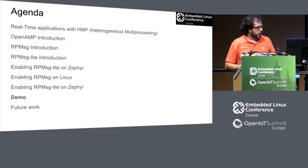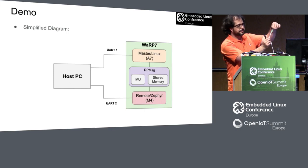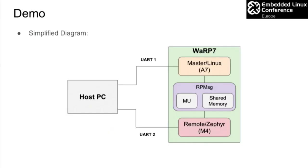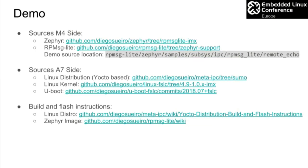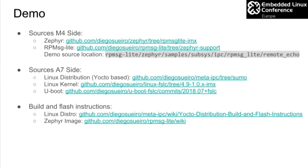For the demo, I have the Warp7 board — a very small board. The master domain with Linux runs on the A7, connected to UART1. The remote side runs Zephyr on the M4 core, with UART2 connected. Between the two cores, RP message uses the messaging unit and shared memory for exchanging data. All source code, compilation instructions, Linux distro generation, and Zephyr image instructions are documented and accessible.